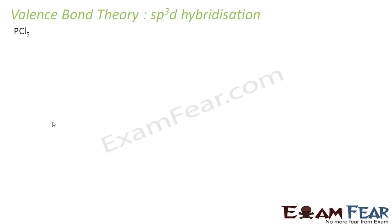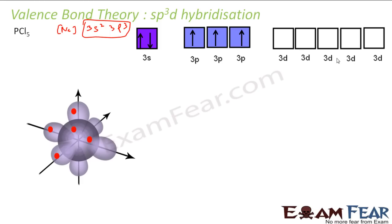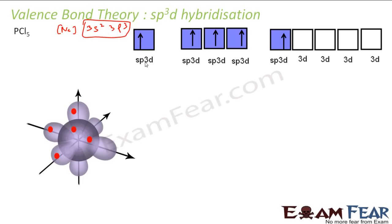Let's take SP3D hybridization with the example of PCl5. For phosphorus, the electronic configuration is Ne 3s2 3p3. Drawing just the outermost shell: 3s has 2 electrons and 3p has one electron each. Note that d orbitals are also present in this case. Now, one electron will move from 3s2 to 3d, and they will form SP3D hybridization.